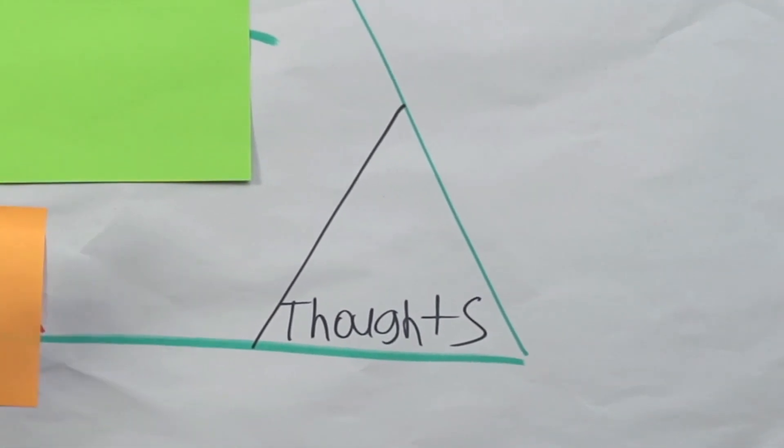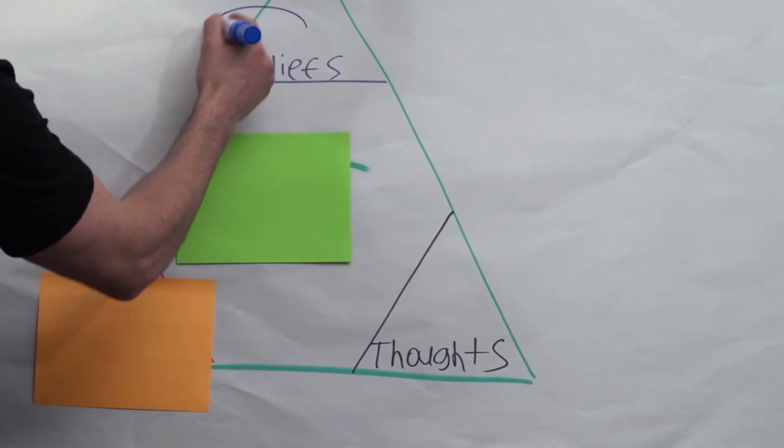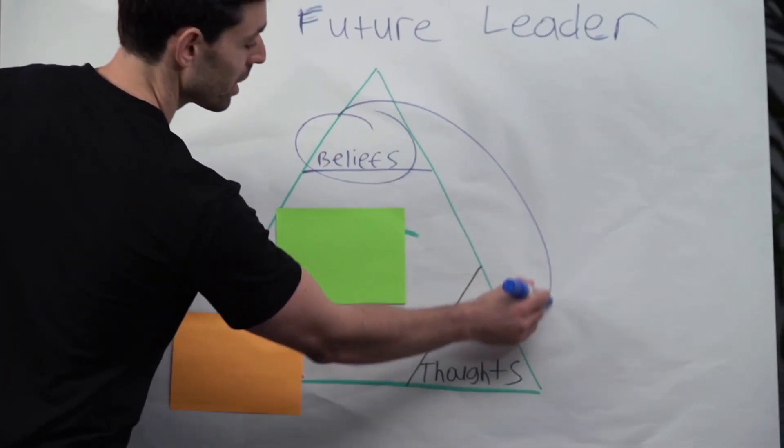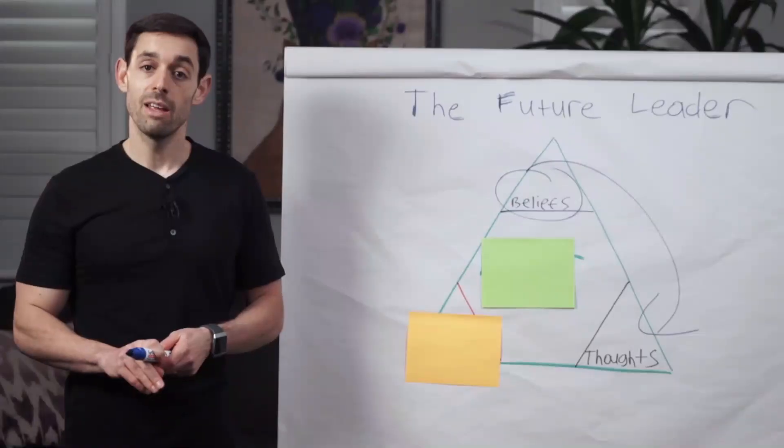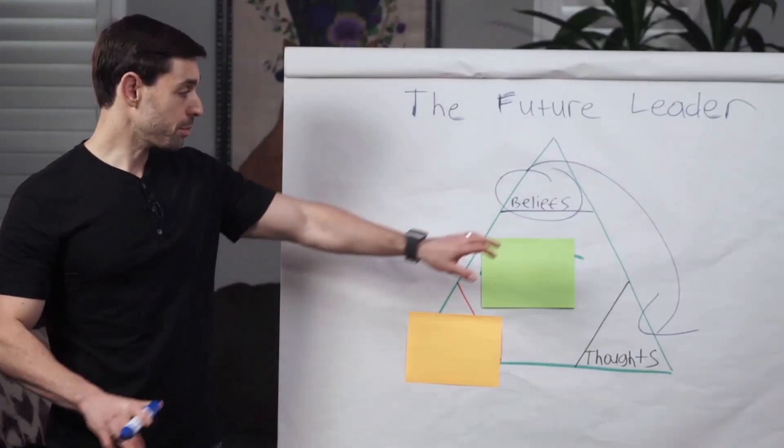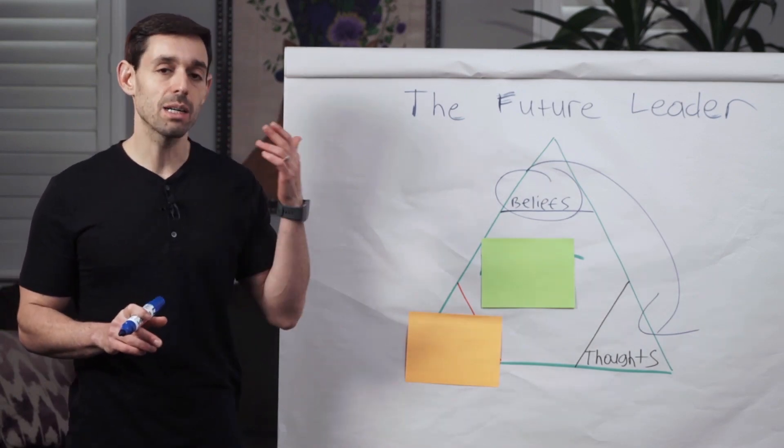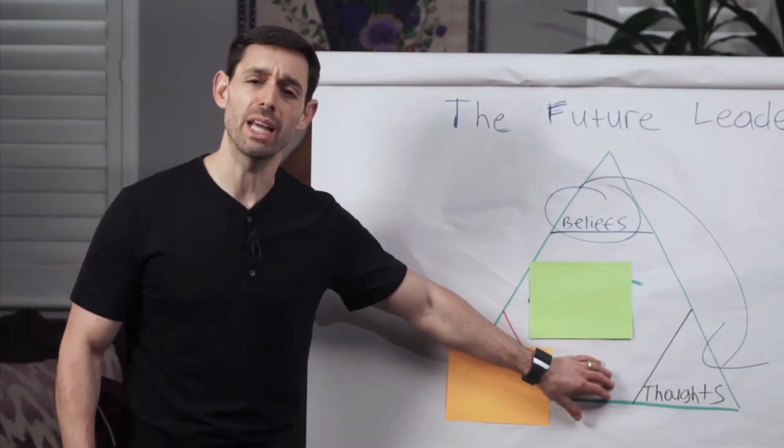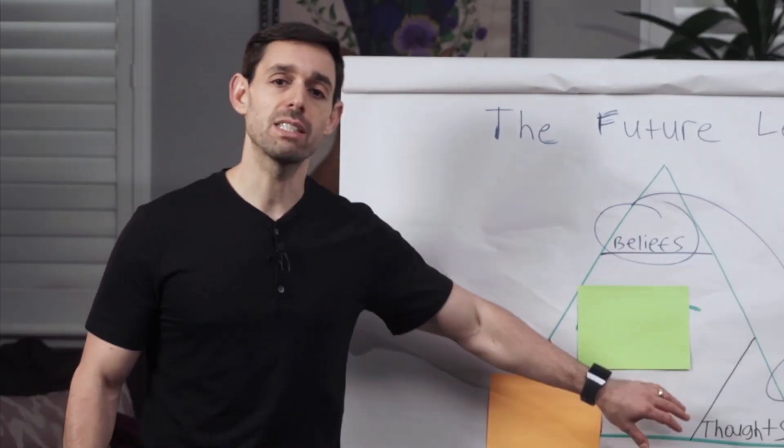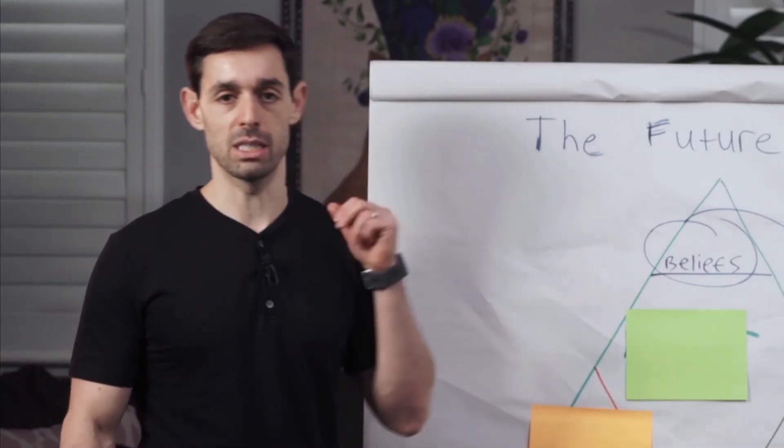Your thoughts are going to be specifically around how you think. The way that this works is we start off with our beliefs. Our beliefs are then going to shape our thoughts. If you believe, for example, that people come before profits, then your thoughts are going to be constantly around: How do I upskill my employees? How do I retrain them? How do I invest in our community? How do I create better experiences for our people?